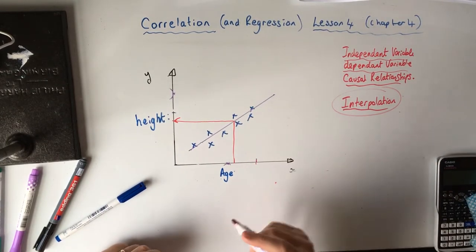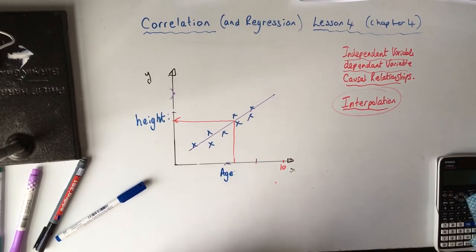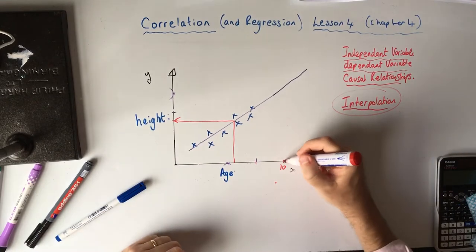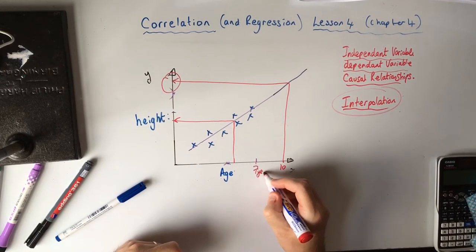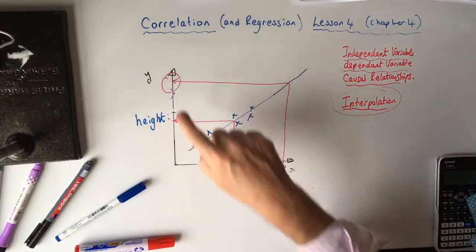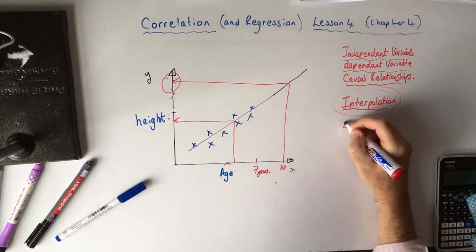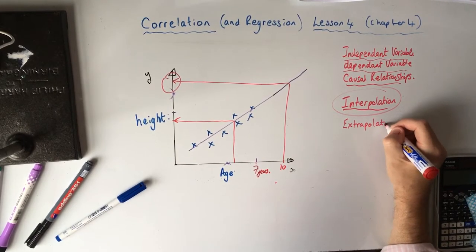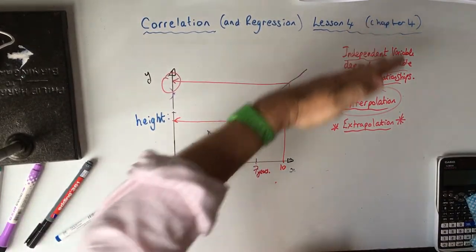Now you could say, what happens if a tree is 10 years old and your data only went up to seven years? You could extend your line of best fit and say it would be that high in 10 years. But if you do that, that is not called interpolation — that's called extrapolation. You are extrapolating, saying if it carried on this is what would happen.